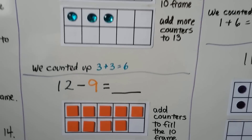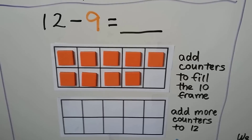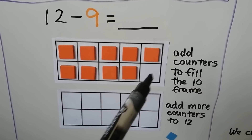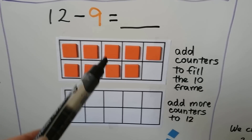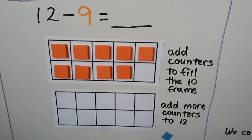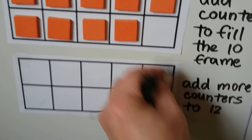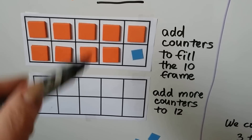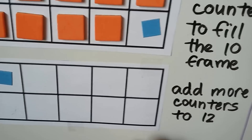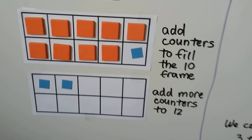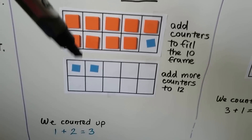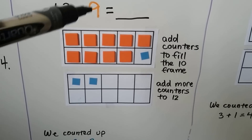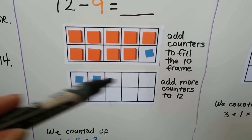Let's try it again: 12 minus nine. We start with nine counters — a 10 frame with one missing. One less than 10 is nine. We fill the 10 frame to make a 10, then add more counters to get to 12: ten, eleven, twelve. We added one and two more — 1 plus 2 is 3. So 12 minus nine is equal to 3.